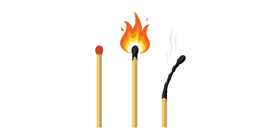One way would be to light up the match and see that it works as intended. However, this means that you no longer have a working match. This is a classic example of a product where you cannot fully verify the output of your production process, because if you did, it means that you have destroyed your product.